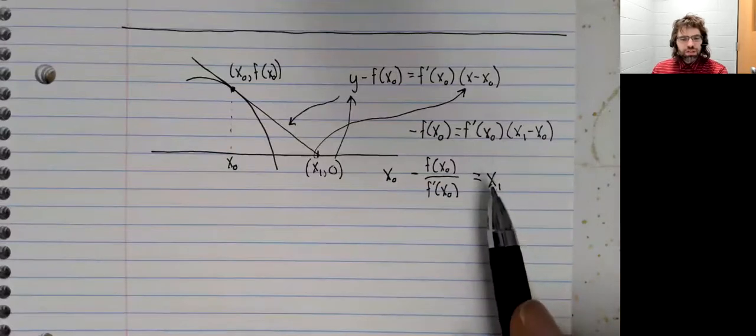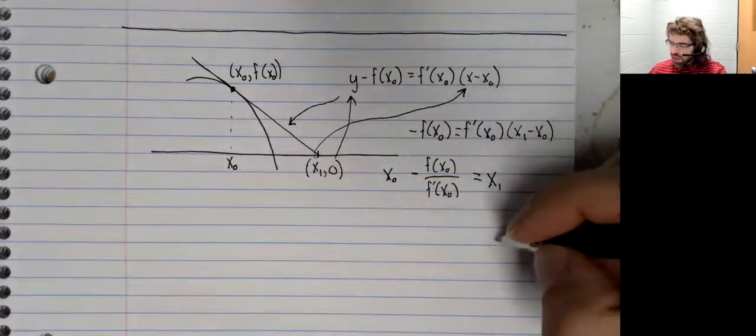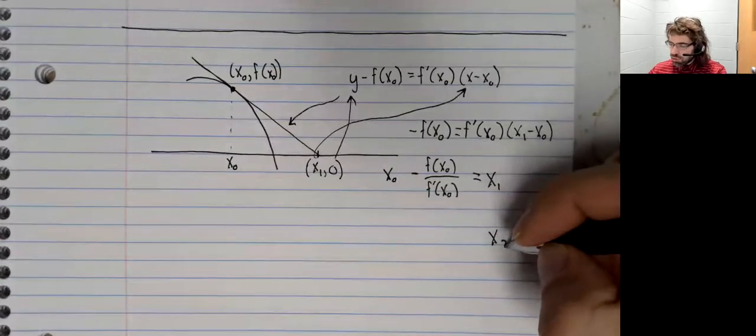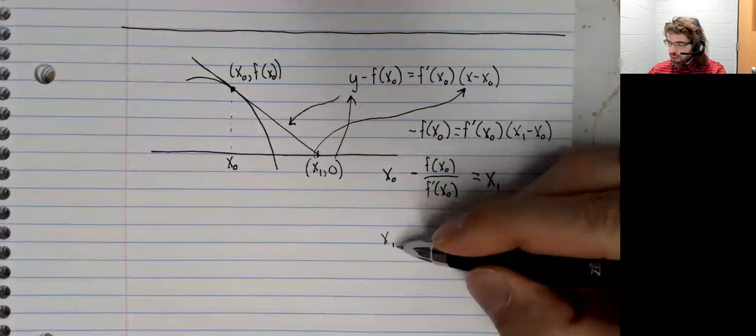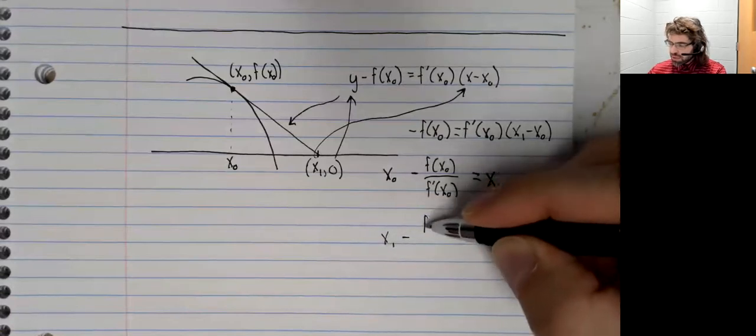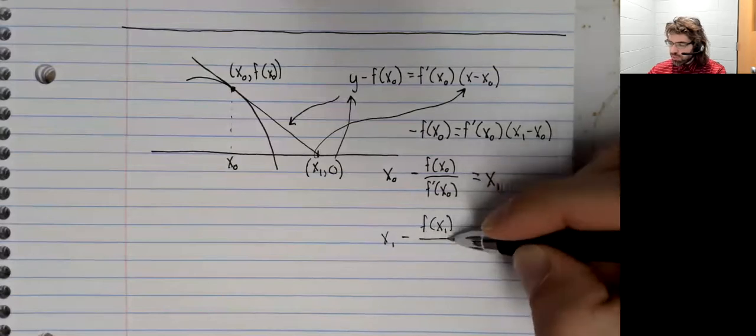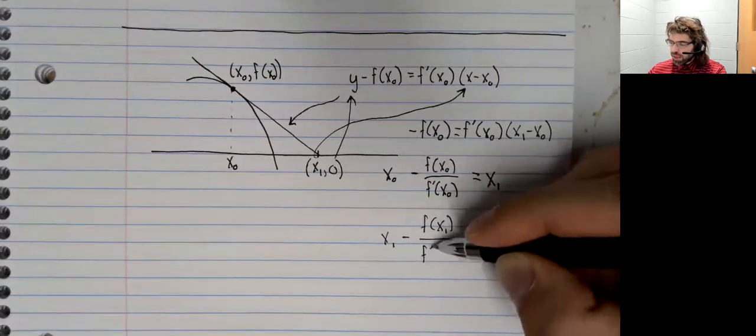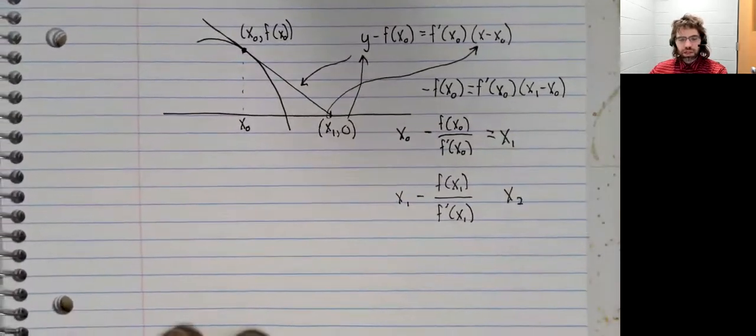Once you found X1, you repeat this argument to find X2. X2 is X1 minus f of X1 over f prime of X1.